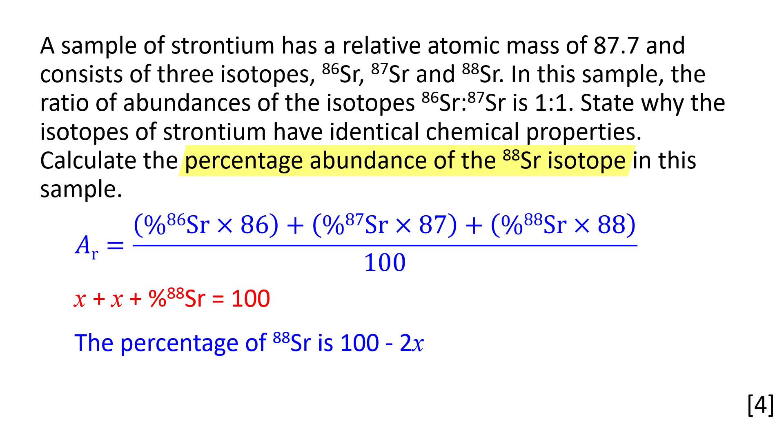Next, we have to substitute the percentage of each isotope into the relative atomic mass equation using terms of x. We are also given the relative atomic mass of strontium in the question. We can put this into the equation too.